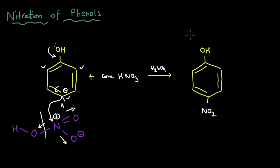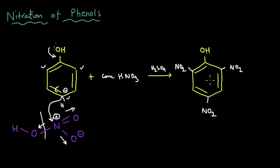The electron density was higher at the ortho positions as well, so the NO2 will not just get added at the para position — it will also get added at the two ortho positions. So instead of the paranitrophenol we wanted, what we got was 2,4,6-trinitrophenol, which is commonly called picric acid.